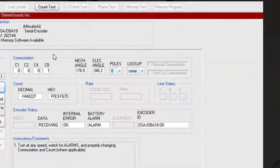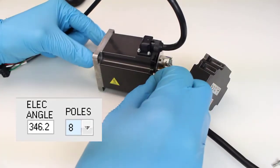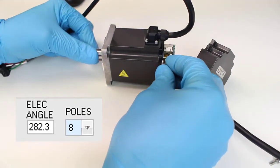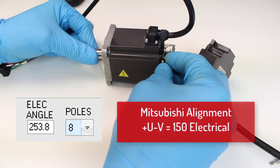Lock the motor with plus U minus V and set the angle to Mitsubishi's standard of 150 electrical degrees. Then tighten the first set screw.